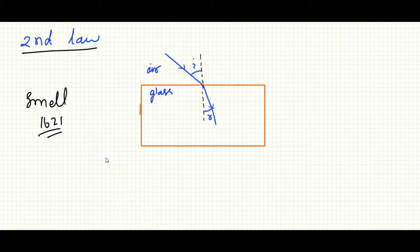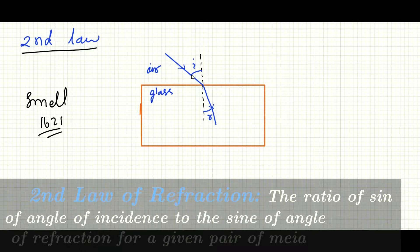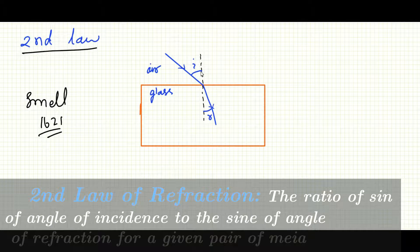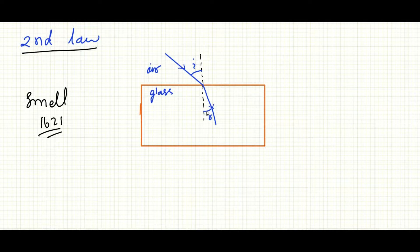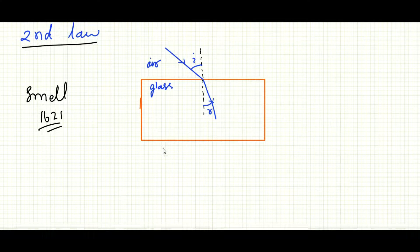According to second law of refraction, the ratio of the sine of the angle of incidence to the sine of angle of refraction is always constant. So we can write this relation as...